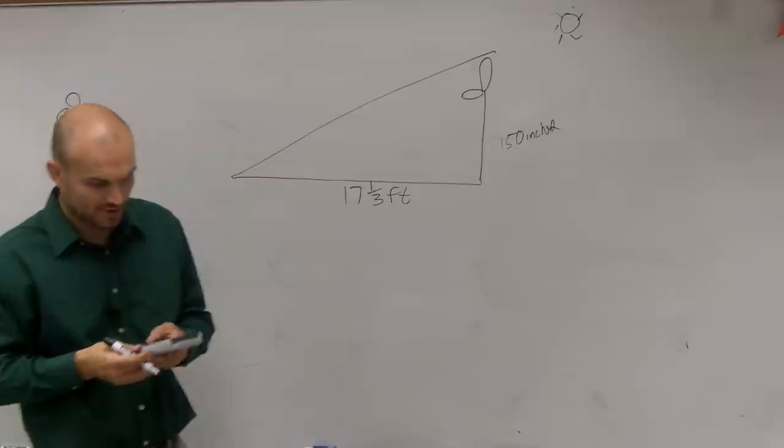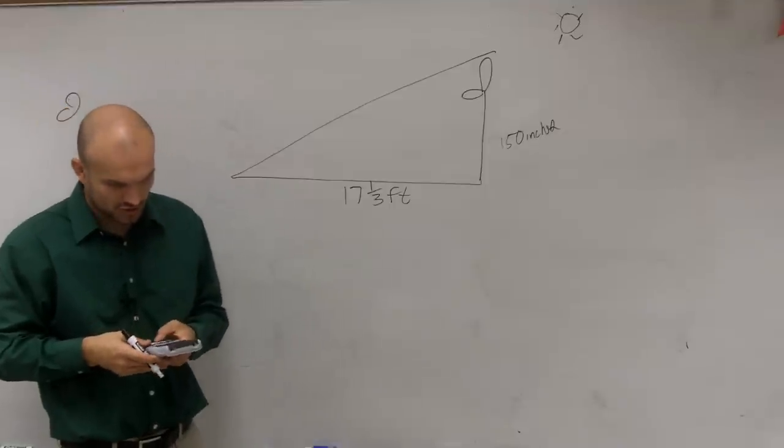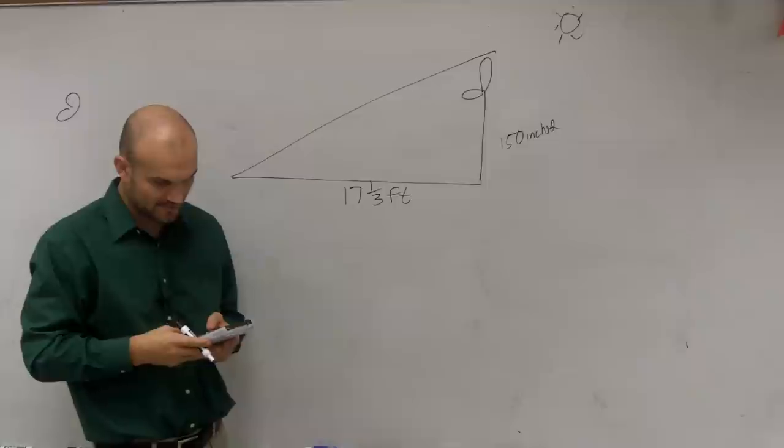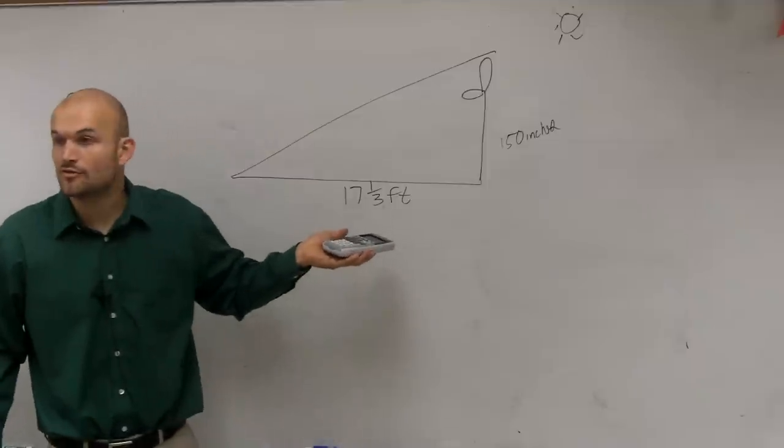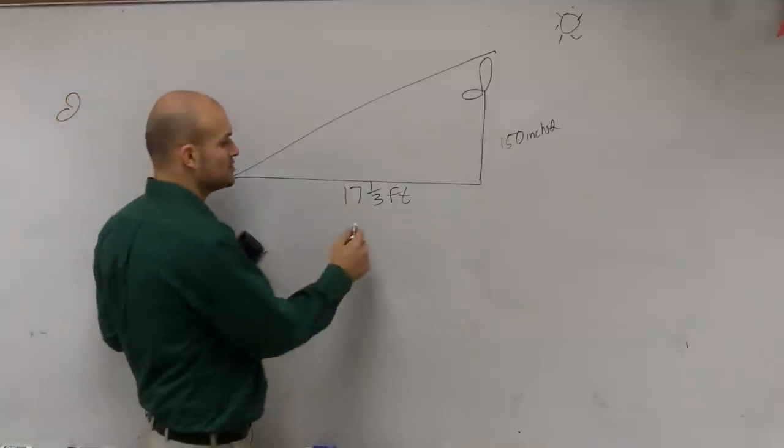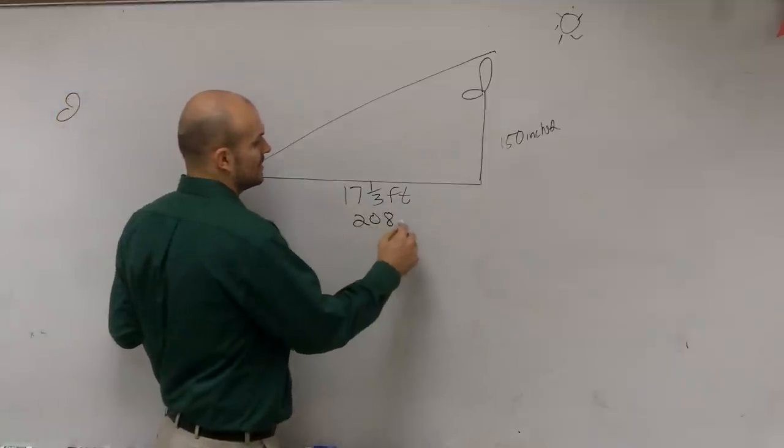Which again, if I want to convert to inches, I'll do 12 times 17 which is going to give me 204, and then a third of a foot is going to be an extra four inches. So that's going to be 208 inches.